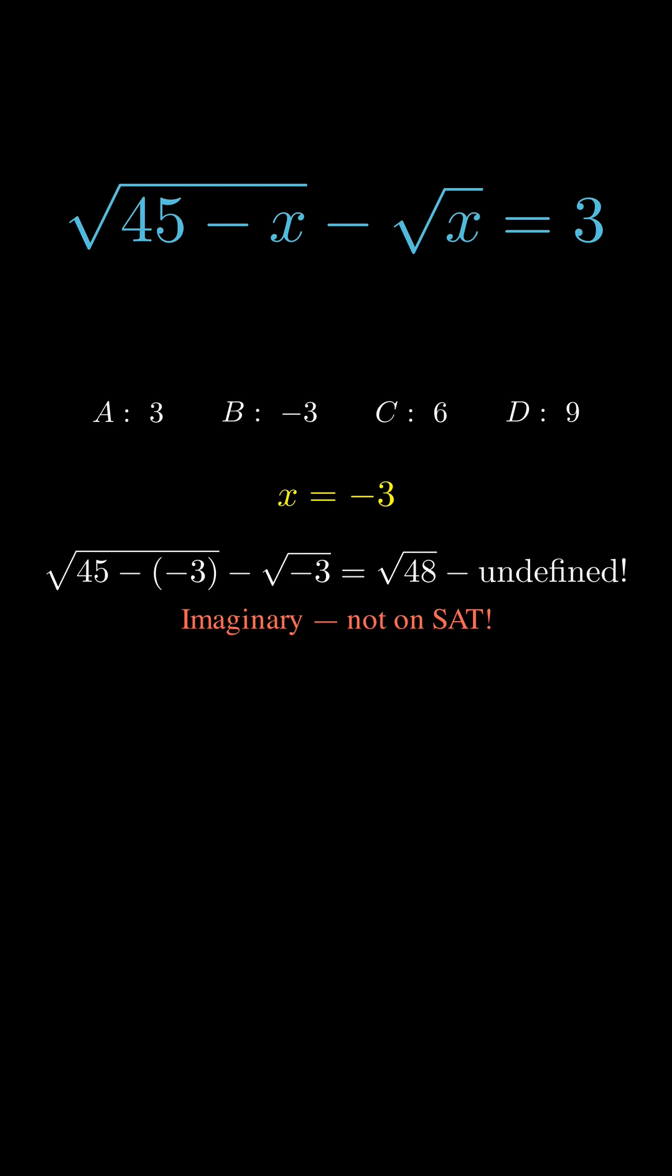Try option C. It gives square root of 39 minus square root of 6, which is close to 3.79, but not quite 3.